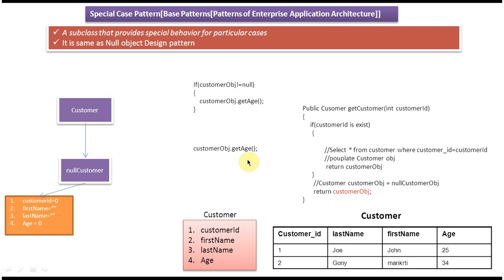Now if you read the definition again, you will understand: a subclass that provides special behavior for particular cases. This NullCustomer subclass provides special behavior for the particular case where the record is not found in the customer table — instead of returning null, we return a NullCustomer object, avoiding null checks in multiple places. That is about the Special Case Pattern. Thanks for watching, bye.